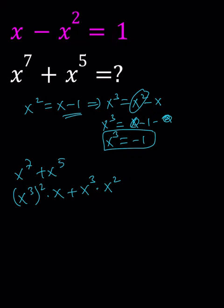Now x cubed is negative 1 from here, so we can replace it with negative 1, but it's squared, so that's going to be 1 times x. x cubed is negative 1, so that's going to be minus x squared.